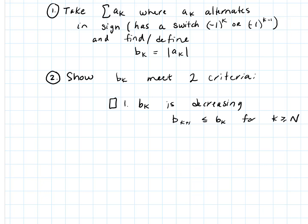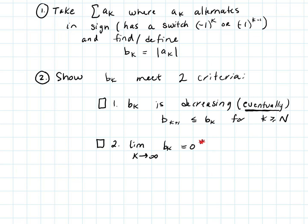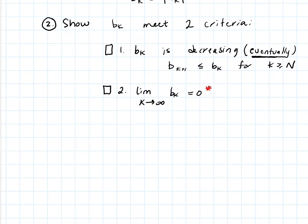This must hold for k greater than or equal to some capital N. As with the integral test, b sub k just has to be eventually decreasing — it doesn't have to always happen, you can take out the first couple of terms. The second criteria is that the limit as k approaches infinity of b sub k equals zero.